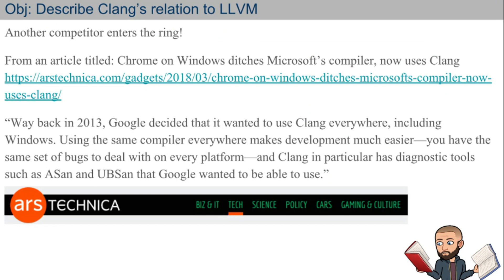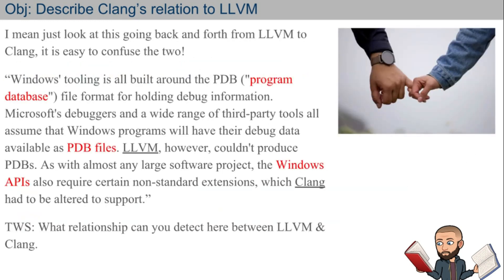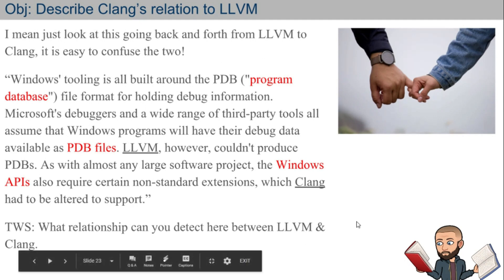Here's another example of Clang being used in the real world other than Apple. I found an article on Ars Technica — apparently Google is using Clang in Chrome. Way back in 2013, Google decided it wanted to use Clang everywhere, including Windows. Using the same compiler everywhere makes development much easier, and you have the same set of bugs to deal with on every platform.